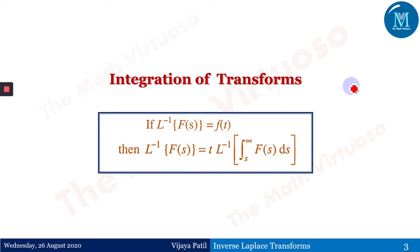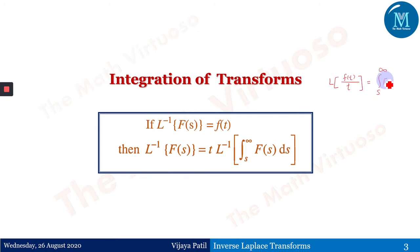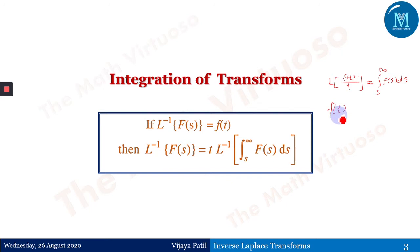This statement comes from the effect of division by t for the Laplace transform. We have seen that the Laplace transform of f(t)/t equals the integration from s to infinity of F(s) ds. Taking L to the other side gives L inverse, so it becomes f(t), and t moves to the other side giving t into the Laplace inverse of the integral from s to infinity of F(s) ds.